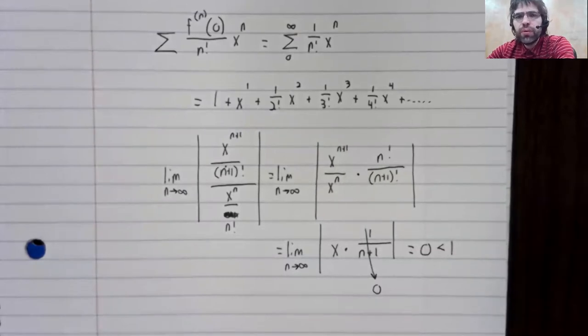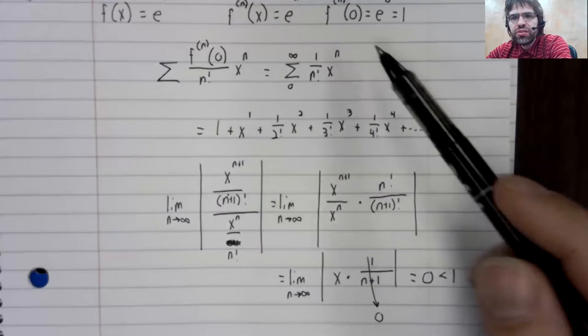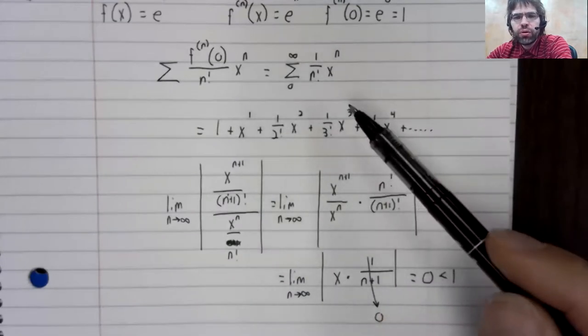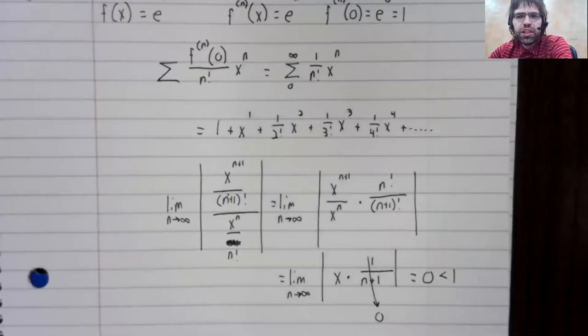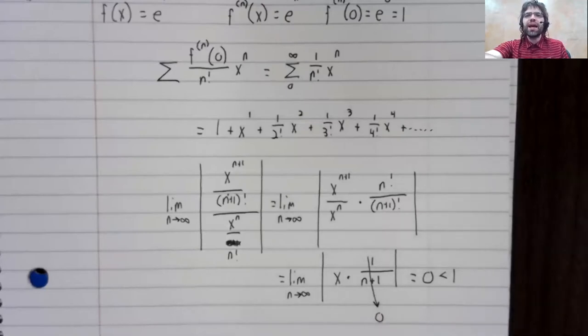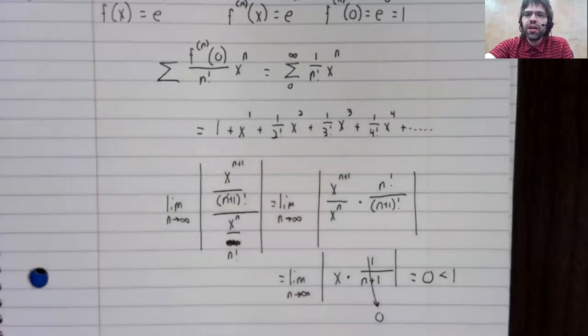So whatever x is, this series converges. We haven't shown that this series always equals e to the x. That is in fact true. But at the moment all we can say is that e to the x gives us this as its MacLaurin series.